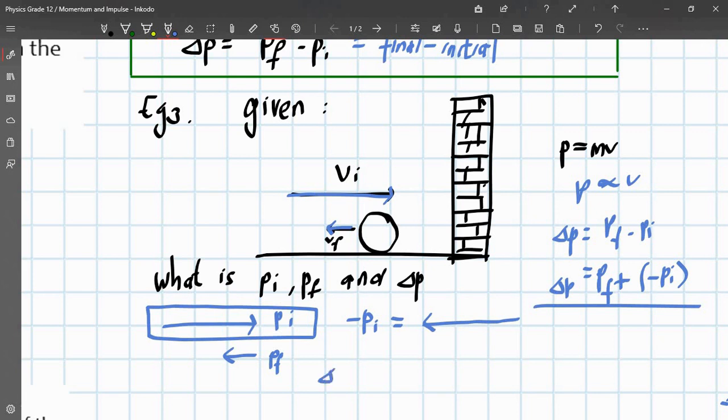Now we have minus pi and we have pf. So we can say that change in momentum will be equal to the final momentum plus the negative initial momentum. And that's going to give you, that's your pf, one block, and three blocks, we have your change in p.